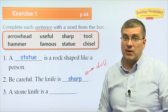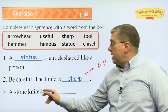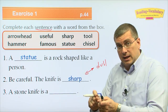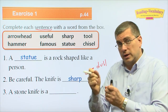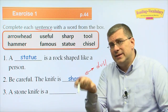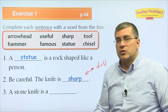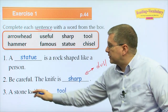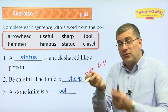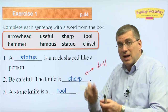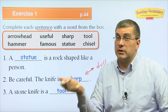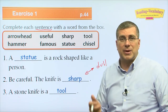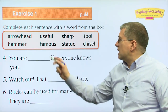Number three: a stone knife is a blank. A stone knife means a stone you use as a knife. If you're using a rock or stone as a knife, it's not just a rock anymore — it becomes a tool. A stone knife is a tool. A tool is something you use to get something done.